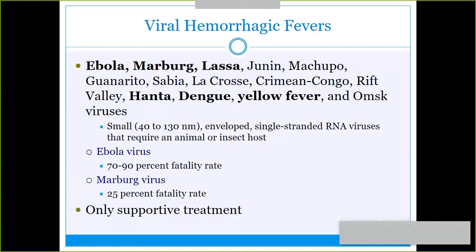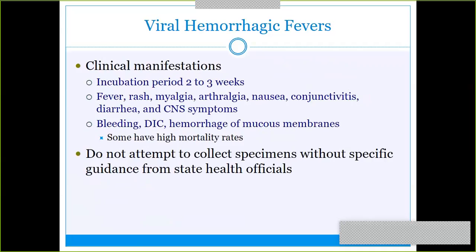Hemorrhagic fever viruses — Ebola, Marburg, Lassa, Hanta, Dengue, and Yellow fever — are all good bioterrorism viruses because there is no known cure; you just treat the patient and hope for the best. Ebola has a 70 to 90 percent fatality rate, and Marburg has about 25 percent — still significant. They are called hemorrhagic because you get hemorrhaging through the mucous membranes, which can lead to disseminated intravascular coagulation (DIC) — always an emergency situation.